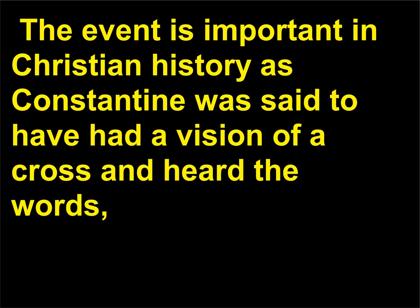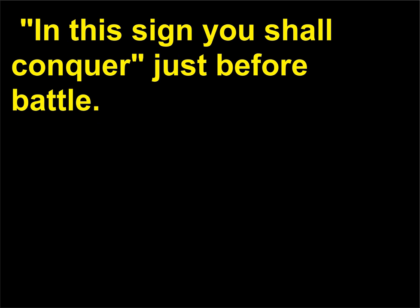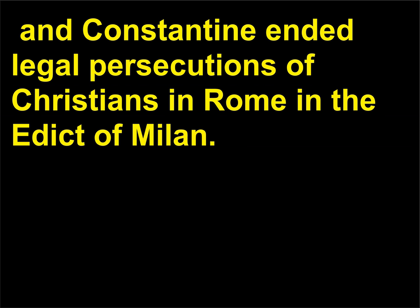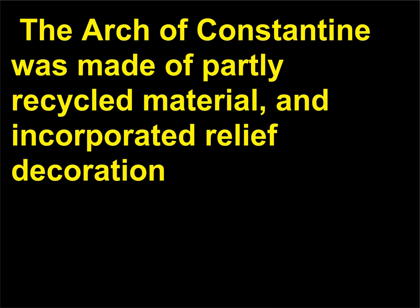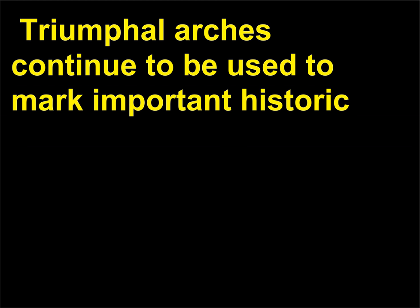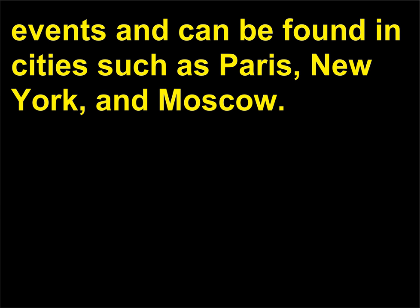The event is important in Christian history, as Constantine was said to have had a vision of a cross and heard the words 'In this sign you shall conquer' just before battle. Constantine's mother Helen was Christian, and Constantine ended legal persecutions of Christians in Rome in the Edict of Milan. The Arch of Constantine was made of partly recycled material and incorporated relief decoration from monuments dedicated to earlier rulers such as Marcus Aurelius, Trajan, and Hadrian. Triumphal arches continue to be used to mark important historic events and can be found in cities such as Paris, New York, and Moscow.